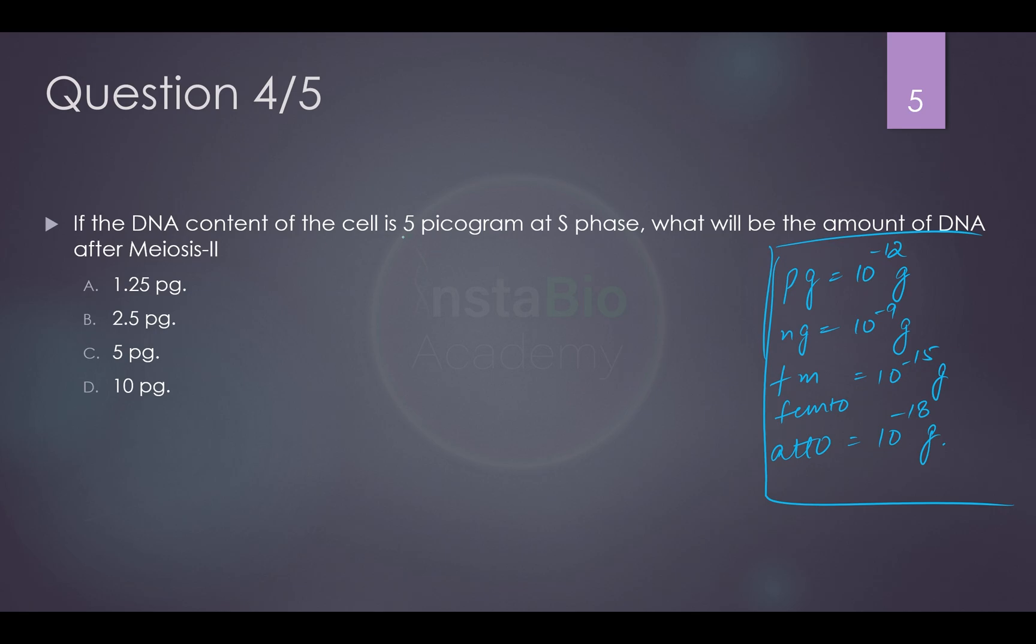So if the DNA content of the cell is 5 picograms at S phase, one more thing, you can pause the video and if you want to try it yourself and come back to see the answer. So if the DNA content of the cell is 5 picograms at S phase, this is important. S phase means synthesis. That means DNA has already doubled. Synthesis means DNA synthesis, DNA has doubled. And that means the haploid 2N DNA amount would be 2.5 picogram.